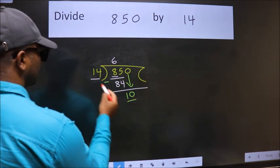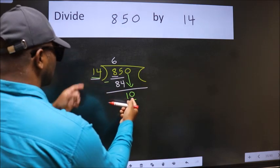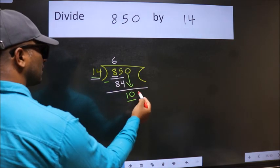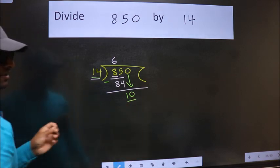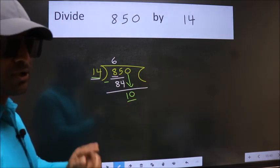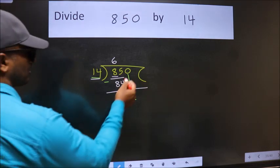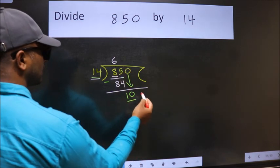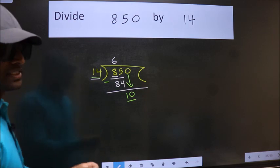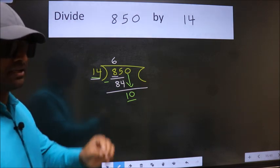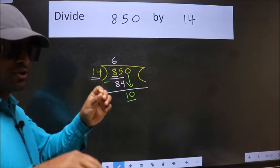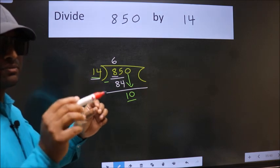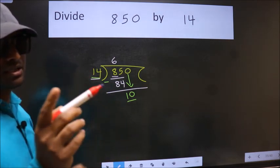And the mistake is this. Here we have 10. Here 14. 10 is smaller than 14. So what many do is they directly put dot, take 0, which is wrong. Why is it wrong? Because just now you brought this number down, and in the same step, you want to put dot, take 0, which is wrong. I repeat. Bring down the number and also put dot, take 0. Both at the same step you should not do.